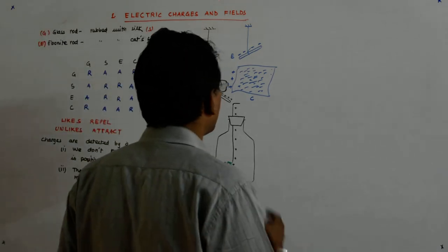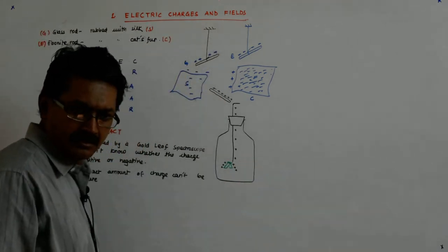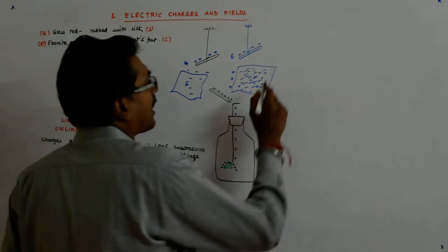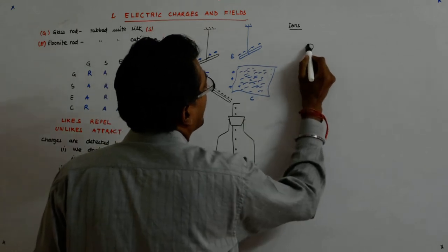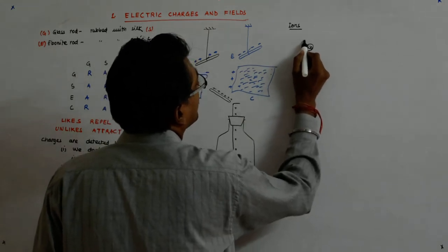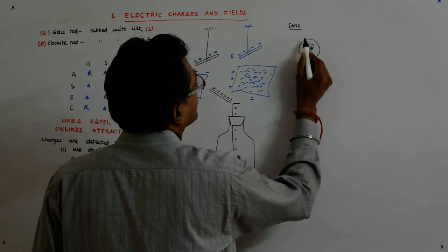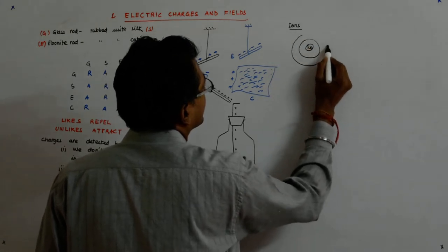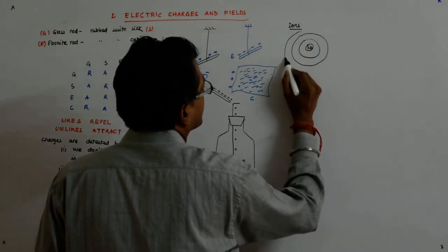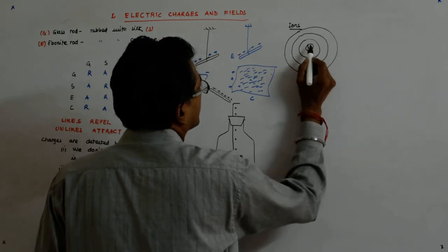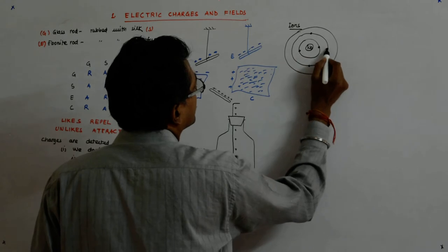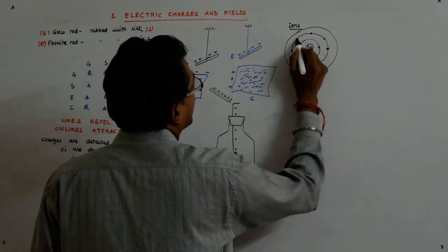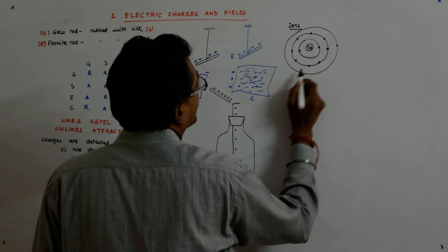We know about ions, so what are ions? You have a sodium metal, and this classical picture that we have tells us there are two electrons here, eight here, and one here.